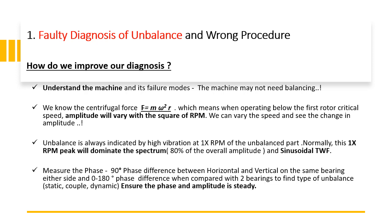Measuring phase also helps confirm unbalance. You should see a 90-degree phase difference between the horizontal and vertical directions on the same bearing, and 0 to 180-degree phase difference comparing two different bearings on either side. Based on this you can confirm the type of unbalance: approximately 0-degree phase difference indicates static unbalance, 180-degree difference indicates couple unbalance, and values between 0 and 180 indicate dynamic unbalance. Phase and amplitude must be steady. Rotor inspection also gives a fair idea of the machine condition.